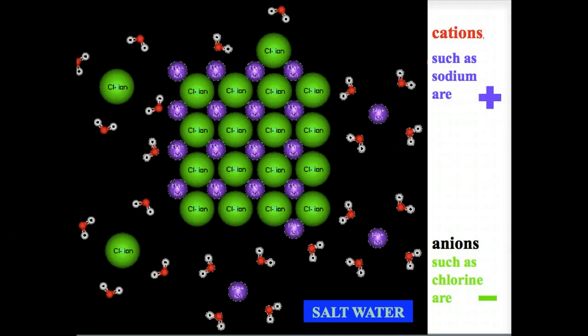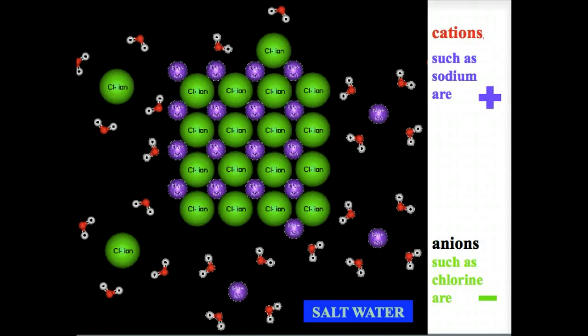Water is often called the universal solvent. The precipitation from the clouds in the hydrological cycle allowed fresh water to dissolve the minerals in the earth, leading to the emergence of salty oceans. Soluble ion formation and hydrogen bonding are critical to these processes.